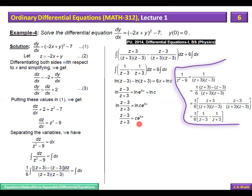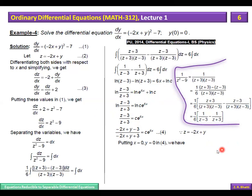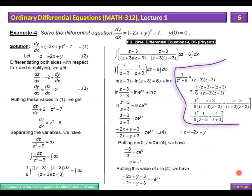Now remember to substitute back the value of z = -2x + y. Replacing z: ((-2x+y) - 3)/((-2x+y) + 3) = C·e^(6x). Now to determine C, we use the given condition x = 0, y = 0. Putting in: (-3)/(3) = C, so C = -1. Substituting C = -1 back gives the final particular solution. This was an equation that was not separable — first we made it separable by substitution, and then we solved it.